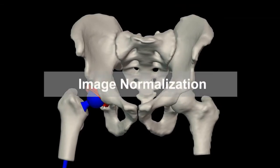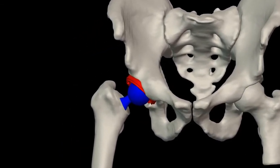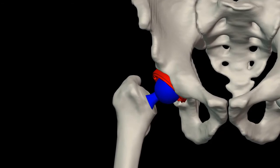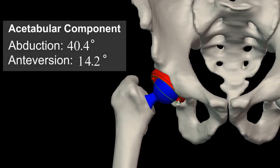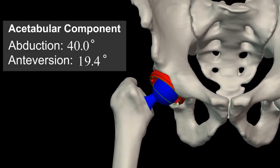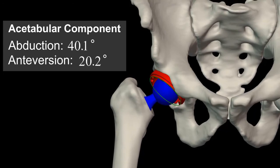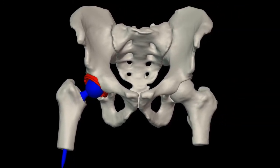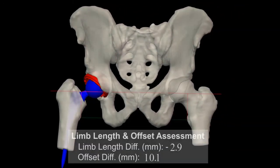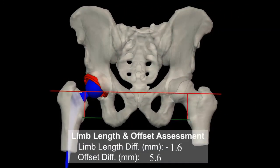Surgeons can visualize component position for reference orientation by normalizing the intraoperative X-ray. RadLink 323 allows surgeons to increase accuracy by streamlining intraoperative imaging.